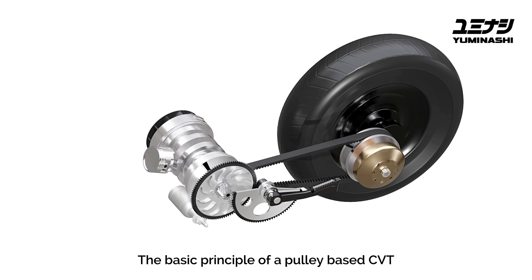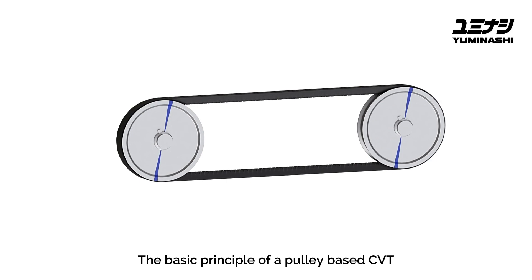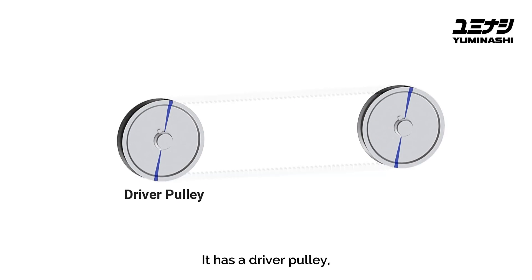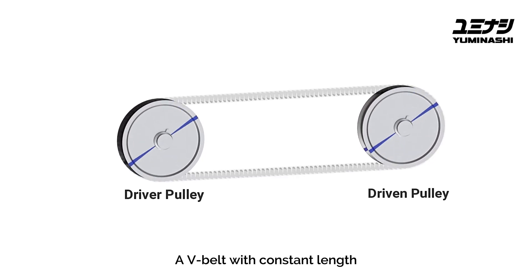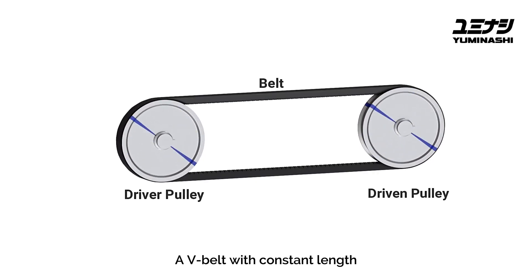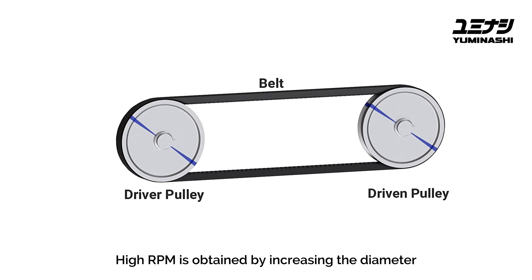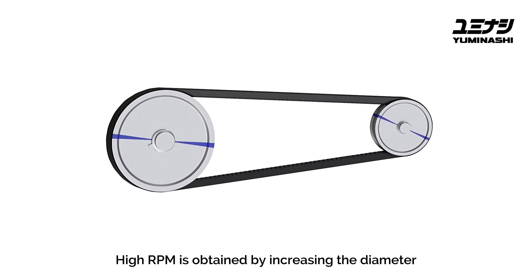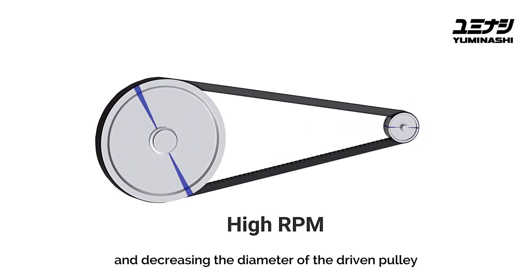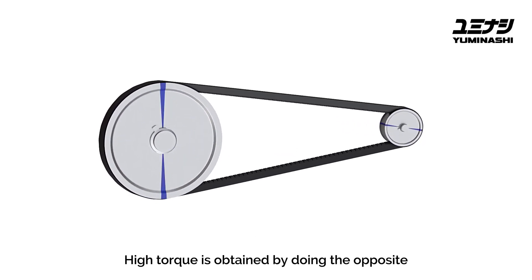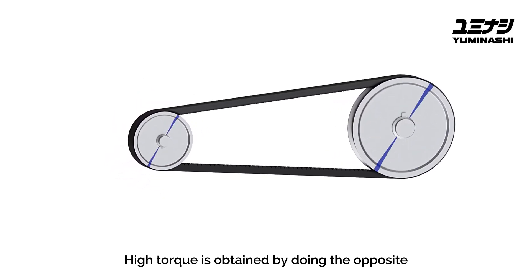The basic principle of a pulley-based CVT can be demonstrated using this simple setup. It has a driver pulley and a driven pulley with variable diameters. A V-belt with constant length runs between these two pulleys. High RPM is obtained by increasing the diameter of the driver pulley and decreasing the diameter of the driven pulley, while high torque is obtained by doing the opposite.